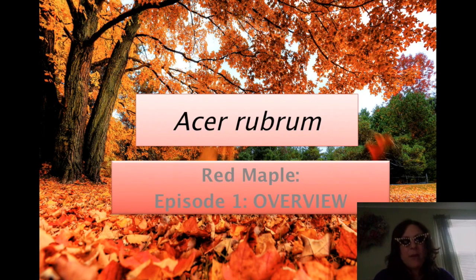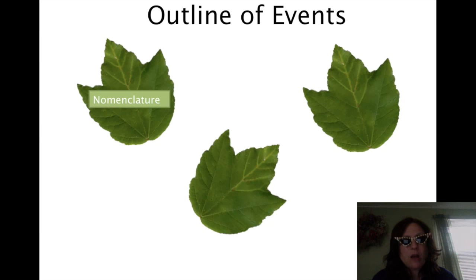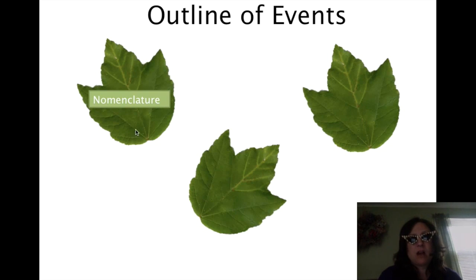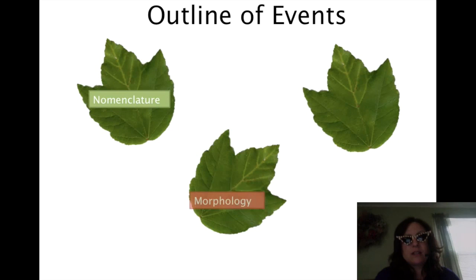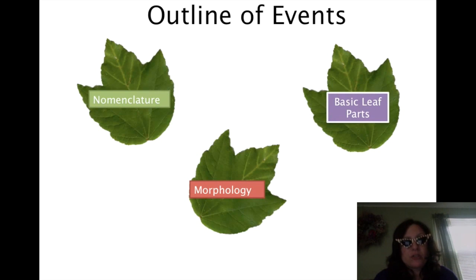Acer rubrum, red maple, Episode 1: The Overview. Isn't that a pretty cool scene? It's all fall and nice. We're gonna cover three things: nomenclature — that's just a system for naming plants; morphology — another big word, it just means the shape or form of something; and third, basic leaf parts, which you'll use when you create your end project to bring to school tomorrow.